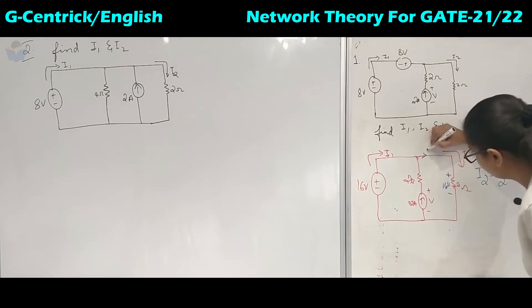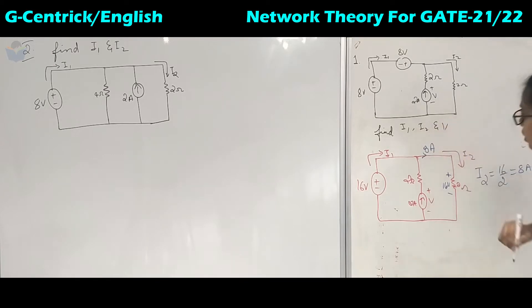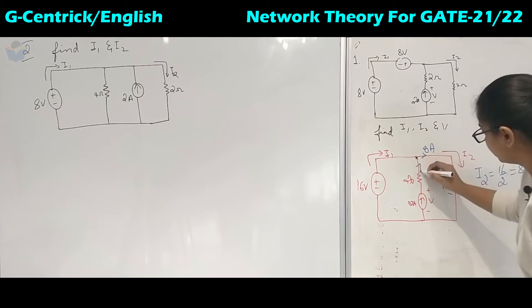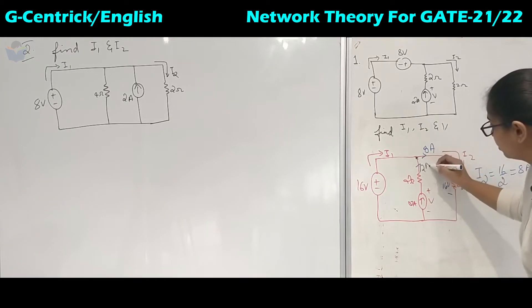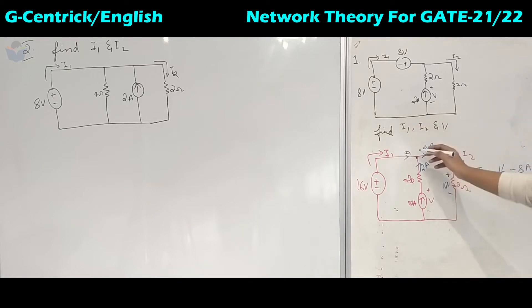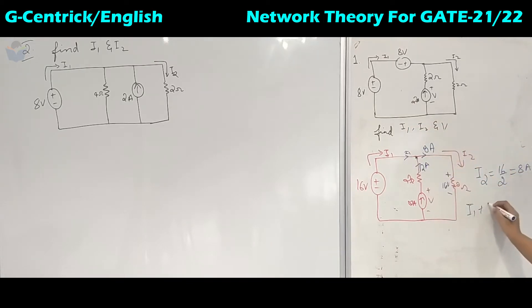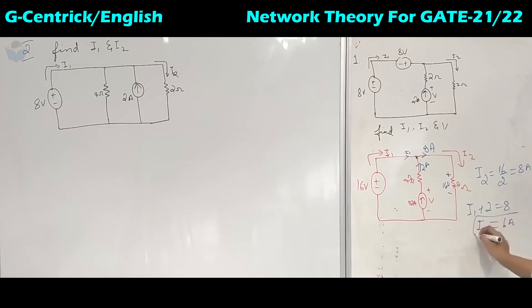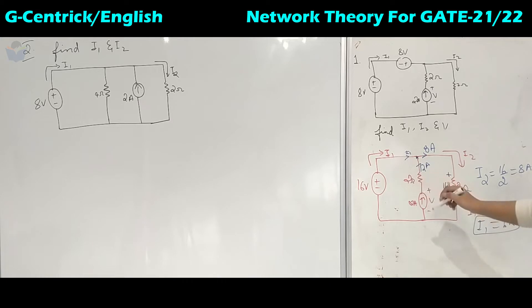So 8 amperes of current flows in that branch, and 2 amperes of current is coming from the current source. We can find I1 by applying KCL: I1 and 2 are incoming currents, so I1 plus 2 equals 8 amperes, giving I1 equal to 6 amperes.